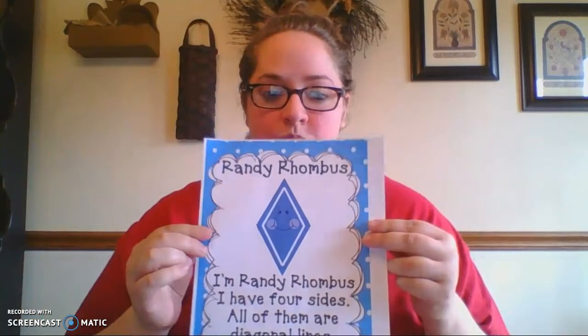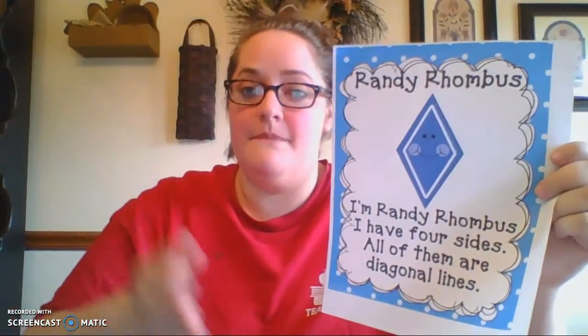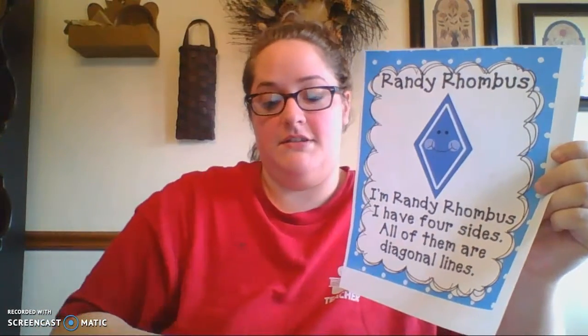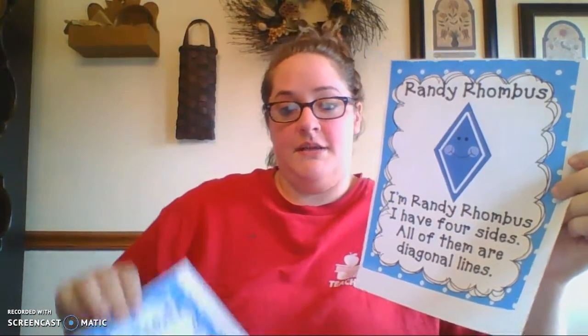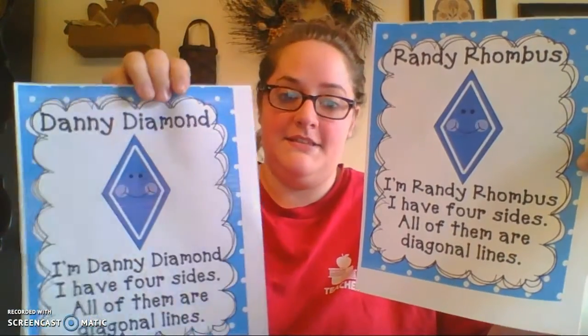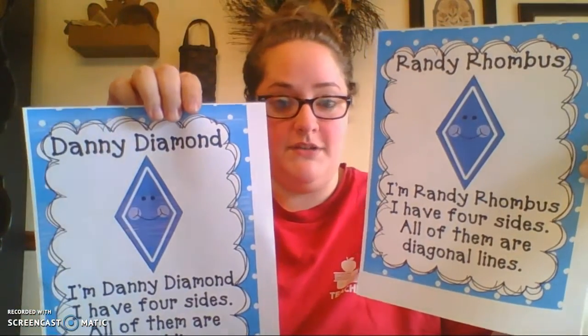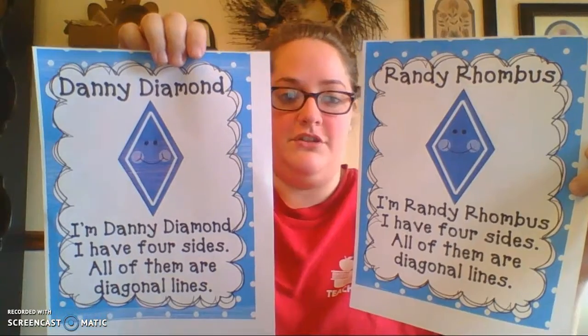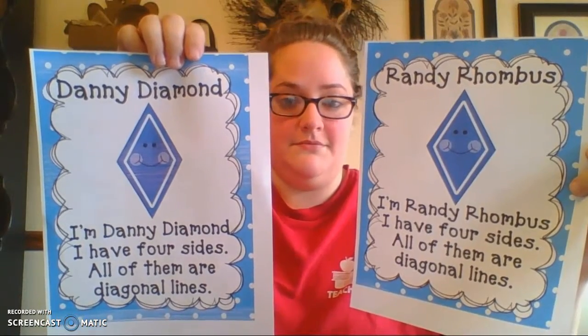So Randy Rhombus. I'm Randy Rhombus. I have four sides. All of them are diagonal lines. It's the same poem as Danny because they're twins — they just have two different names.